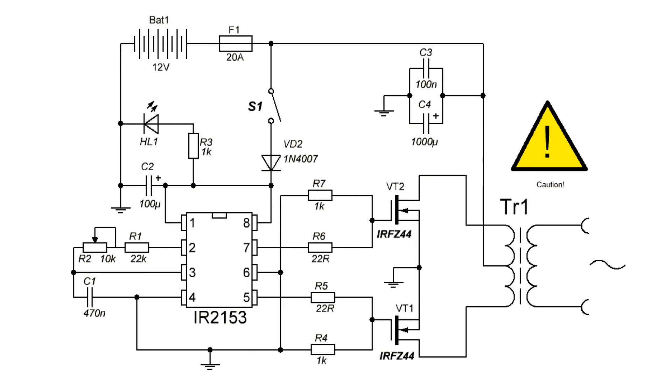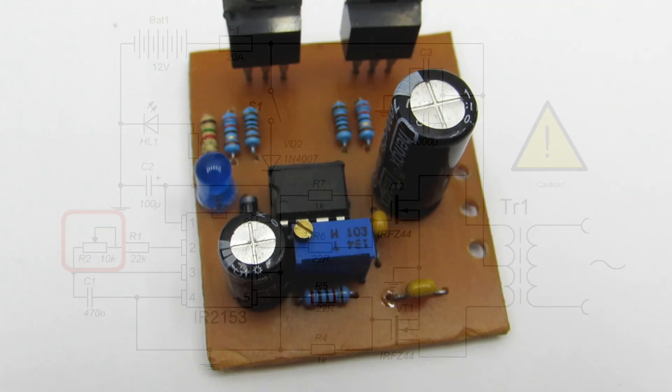Let's view the diagram. IR2153 is set to 50 Hz frequency to work with the network transformer. Inverter circuit is push-pull. It needs the transformer with the midpoint. Trimmer R2 adjusts the frequency within a small range.